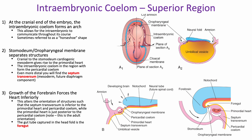The intraembryonic coelom is in the region of the developing heart, so we specifically call this the pericardial coelom. It's going to be forced inferiorly as the forebrain continues to grow. We then see the developing heart located here, with the pericardial coelom just anterior to the heart. Inferiorly, we have the septum transversum, which develops components of your diaphragm — located just inferior to our heart in adult anatomy. This happened due to the head fold. The endoderm of the gut tube captured in this head fold is referred to as the foregut.